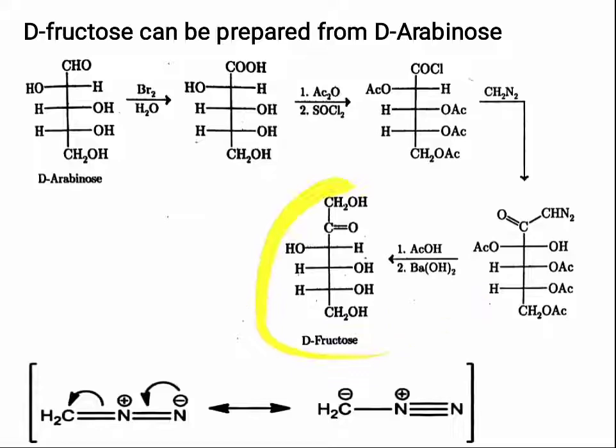If you treat the intermediate first with acetic acid and then with barium hydroxide, you will get D-fructose. The structure of diazomethane can be shown in its canonical form: CH₂⁻ and N₂⁺, where CH₂⁻ is the nucleophile that attacks the carbonyl carbon.